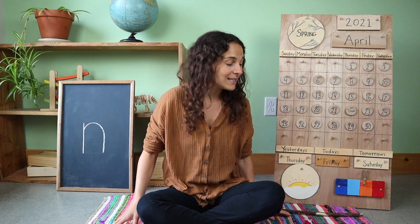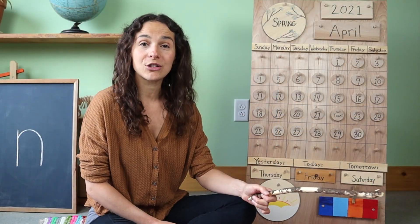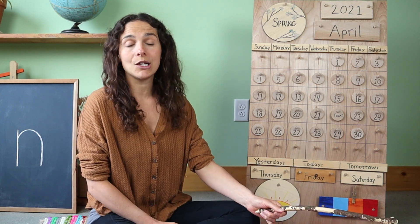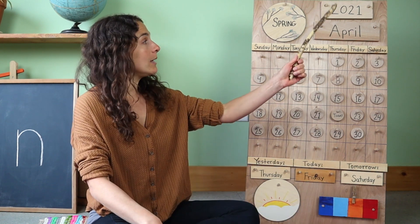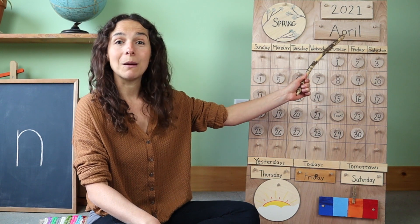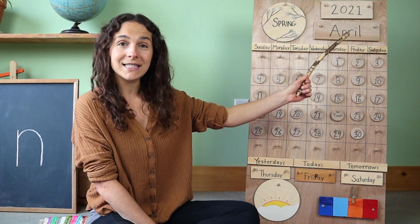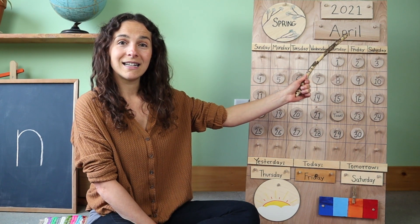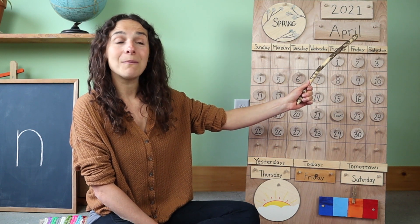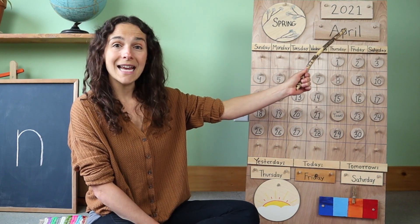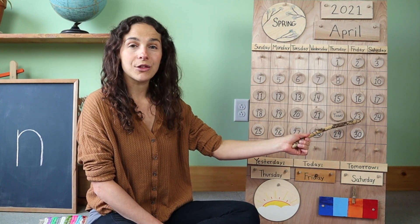Let's continue on with our calendar and weather chart. We need to go over the date. When we say the date, we start off with the month. The month is right up here. Do you know what the month is? April. That's right. The month is April, and today is April 23rd.